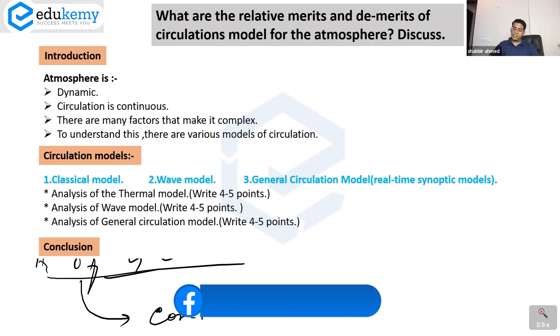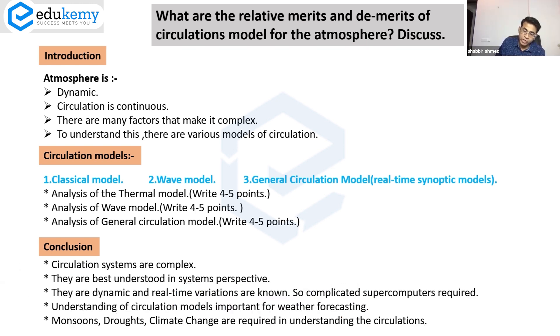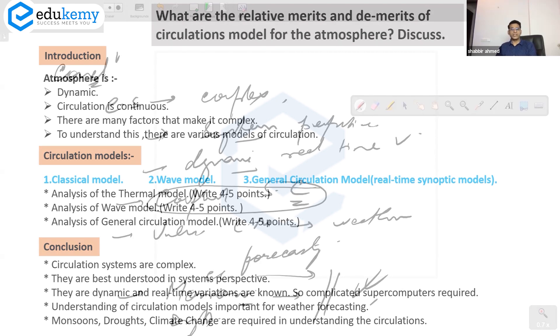In the conclusion, you can say that circulation systems are complex, they are best understood in the system's perspective. They are dynamic, real-time variations so complicated, supercomputers required. Understanding of circulation models important for weather forecasting, monsoons, droughts, climate change. All understanding requires incorporating these techniques in understanding circulations because they are dynamic, they're complex, supercomputers and computing technology is required.